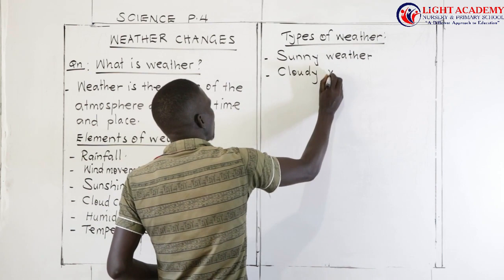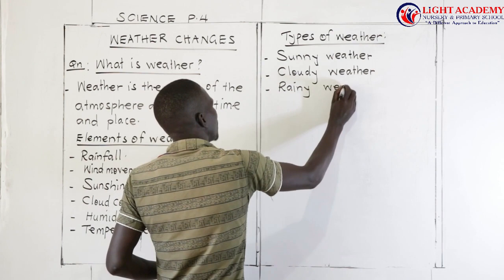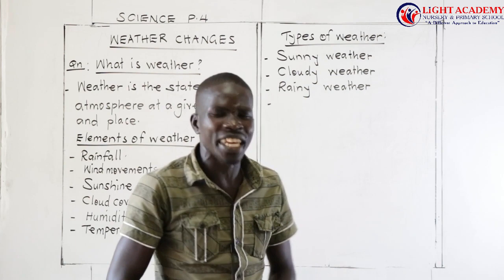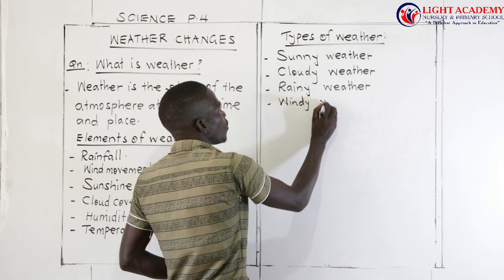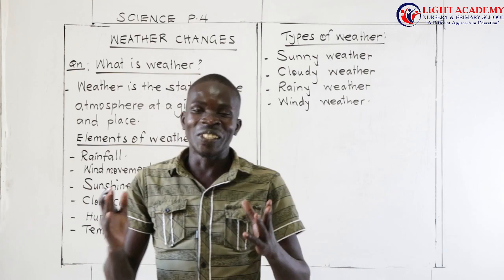Another type of weather is cloudy weather. We also have rainy weather. Apart from sunny, cloudy, and rainy weather, we have what we call windy weather. These are the main types of weather — there are mainly four types.